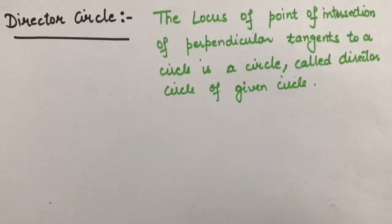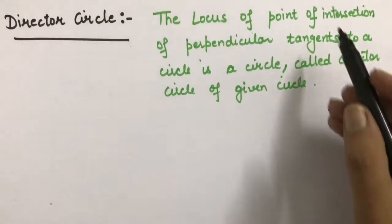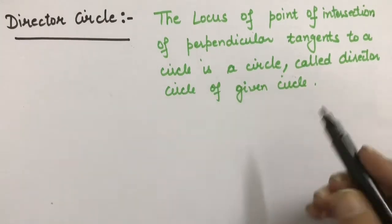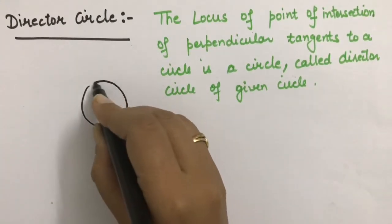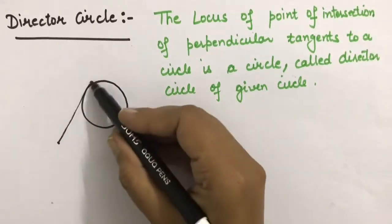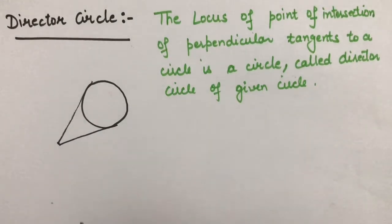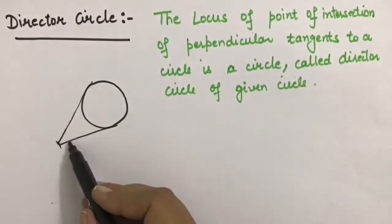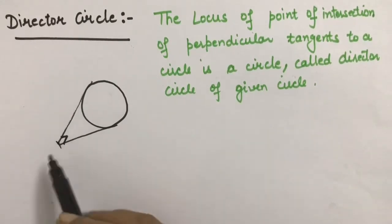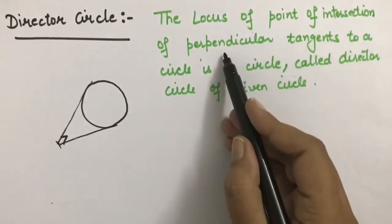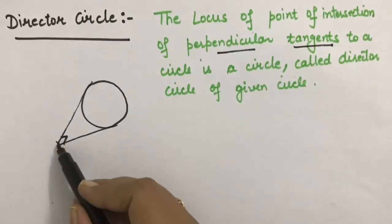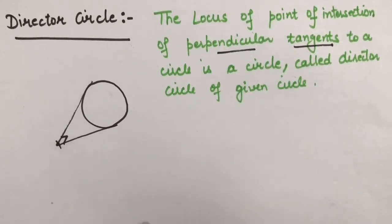Director circle is the locus of points of intersection of perpendicular tangents to a circle. If we have a circle and an exterior point, we can draw two tangents from that exterior point. We have to consider those points where the angle between the tangents is 90 degrees — the points of intersection of perpendicular tangents.